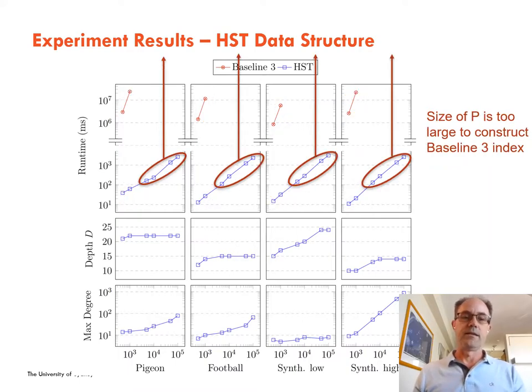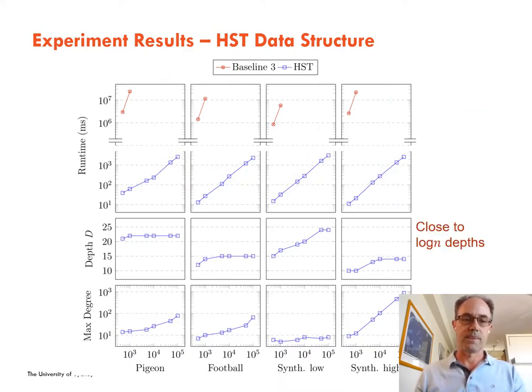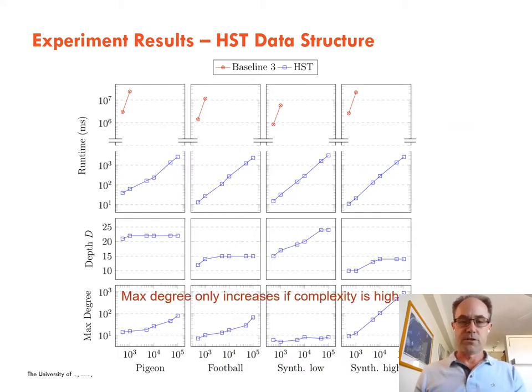Baseline 3 cannot be constructed for the larger input trajectories due to the quadratic number of pairwise sub-trajectories required. The tree depths are a small factor of log n and the maximum degree only increases if the underlying input trajectory has very high complexity.